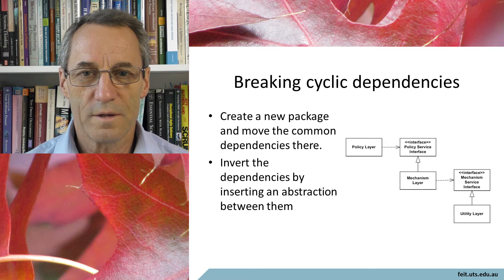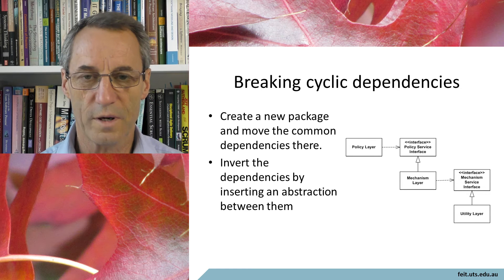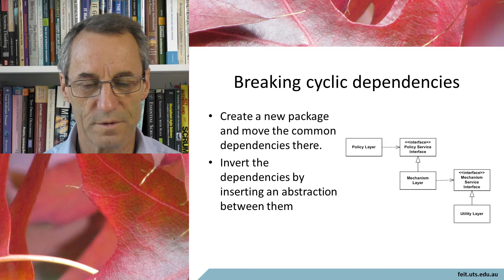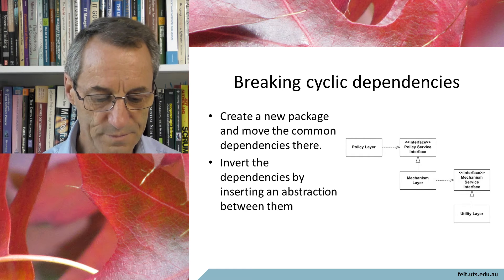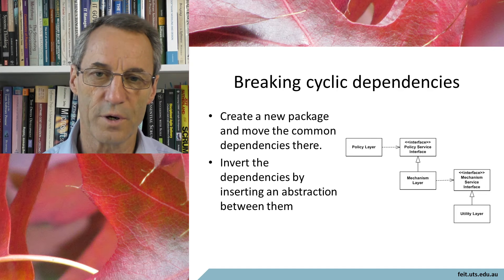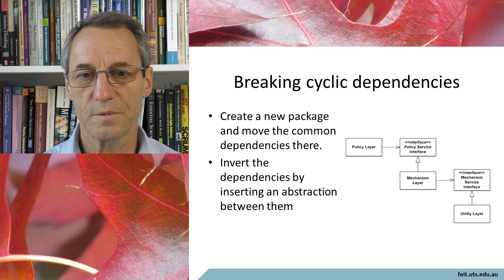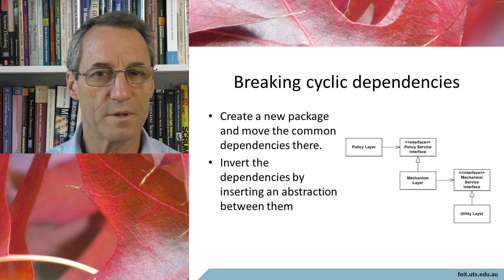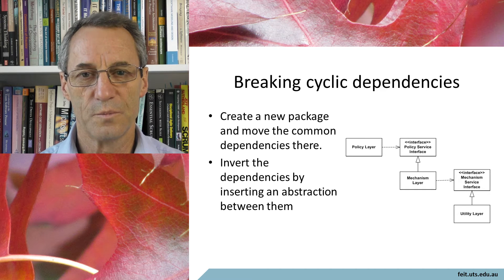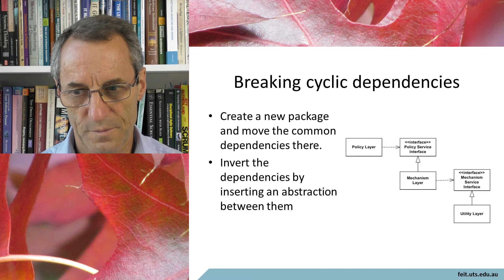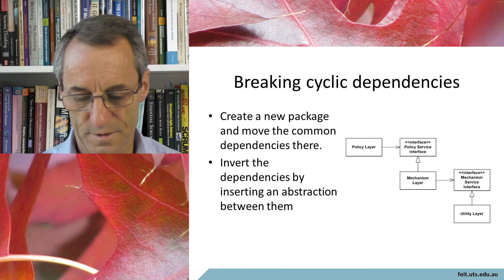There is a way of breaking cyclic dependencies: essentially by creating a new package and moving all the shared dependencies there — you have a common package that the dependencies move into. Alternatively, you can invert the dependencies by inserting an abstraction between them. The abstraction breaks the dependency, so you don't have the direct dependency anymore, and each component has its own dependencies but doesn't imply any others.